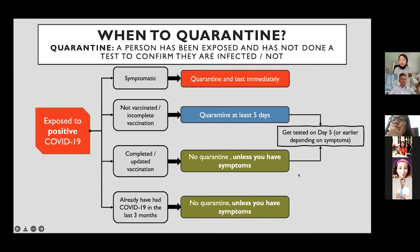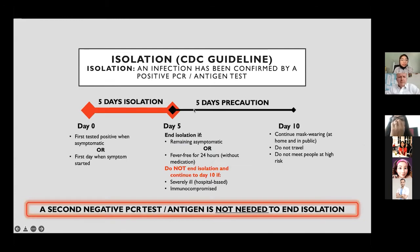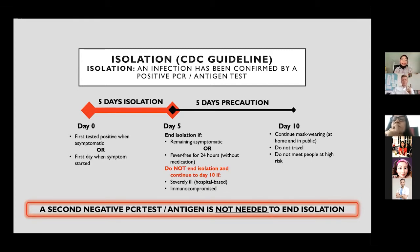If a person has been confirmed to have a positive infection, they need to isolate. Isolation is defined as a confirmed infection by a positive PCR or antigen test, separating infected people from those who are negative to reduce transmission. This is different from quarantine — in quarantine, you don't know whether you are infected but are being careful while waiting for test results.